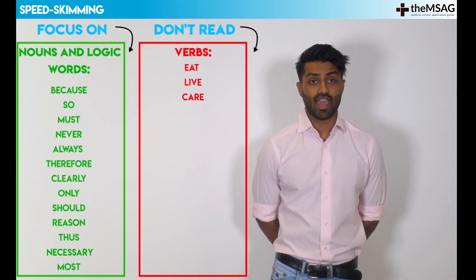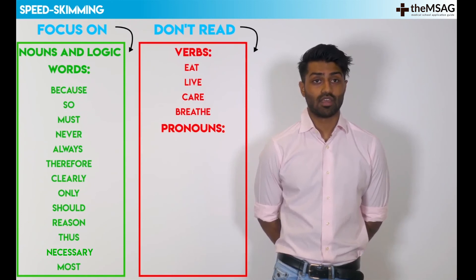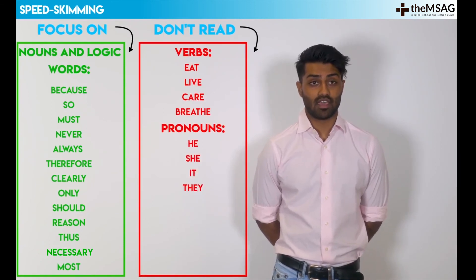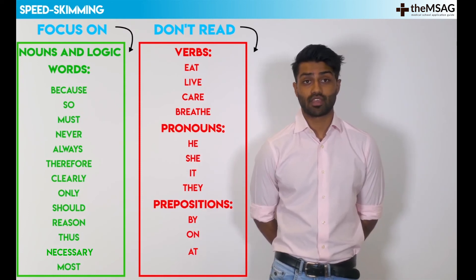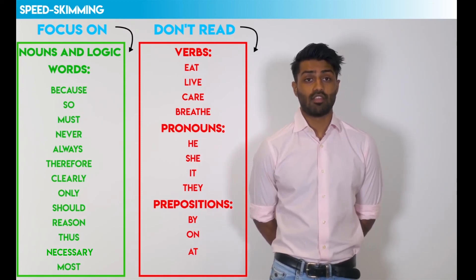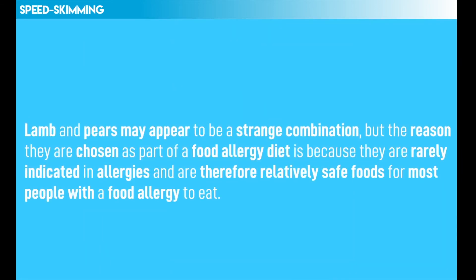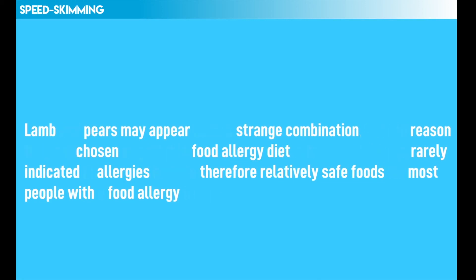Generally, words that contain three letters or fewer can be skipped. To show an example of this, the words highlighted in bold are the ones that should be read when skimming. You can see that by skipping less important words and words containing three letters or fewer, you can still get the general idea of what the text is trying to say.